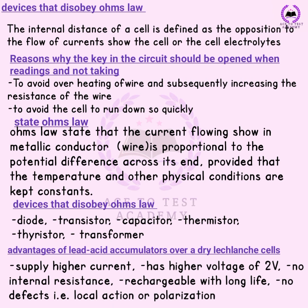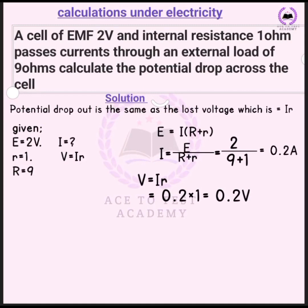A lead-acid accumulator is a secondary cell — it is rechargeable, while dry cells are not rechargeable. The lead-acid accumulator has a voltage of two volts, negligible internal resistance, is rechargeable with a long life, and has no defects like local action or polarization.